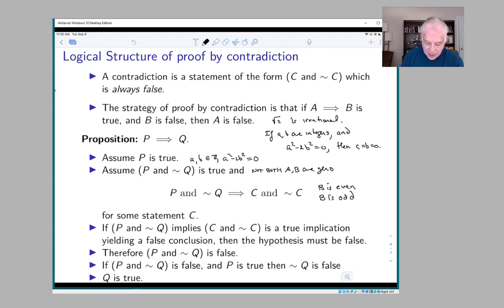So we have a hypothesis P and not Q, an implication where the conclusion is false and the implication is true. The logic was valid, so therefore the hypothesis must be false. So P and not Q must be false.